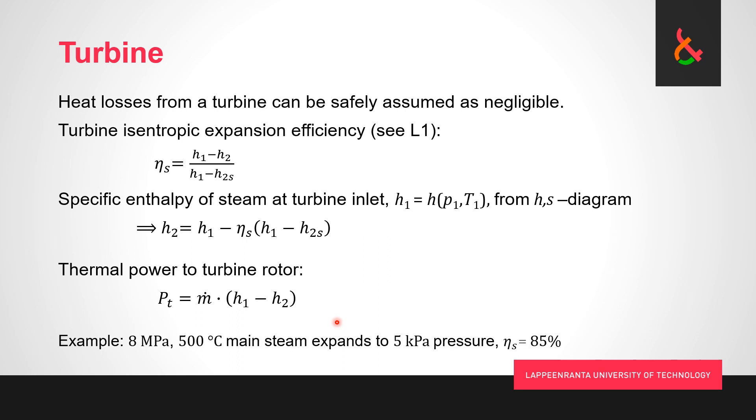Let's take a look at an example, because that is always the best way to figure out what all of these equations actually mean. Suppose we have a situation where we have 8 megapascal main steam, 500 degree Celsius temperature. We know that the steam expands to 5 kilopascal pressure in the turbine, and the isentropic expansion efficiency is 85 percent.